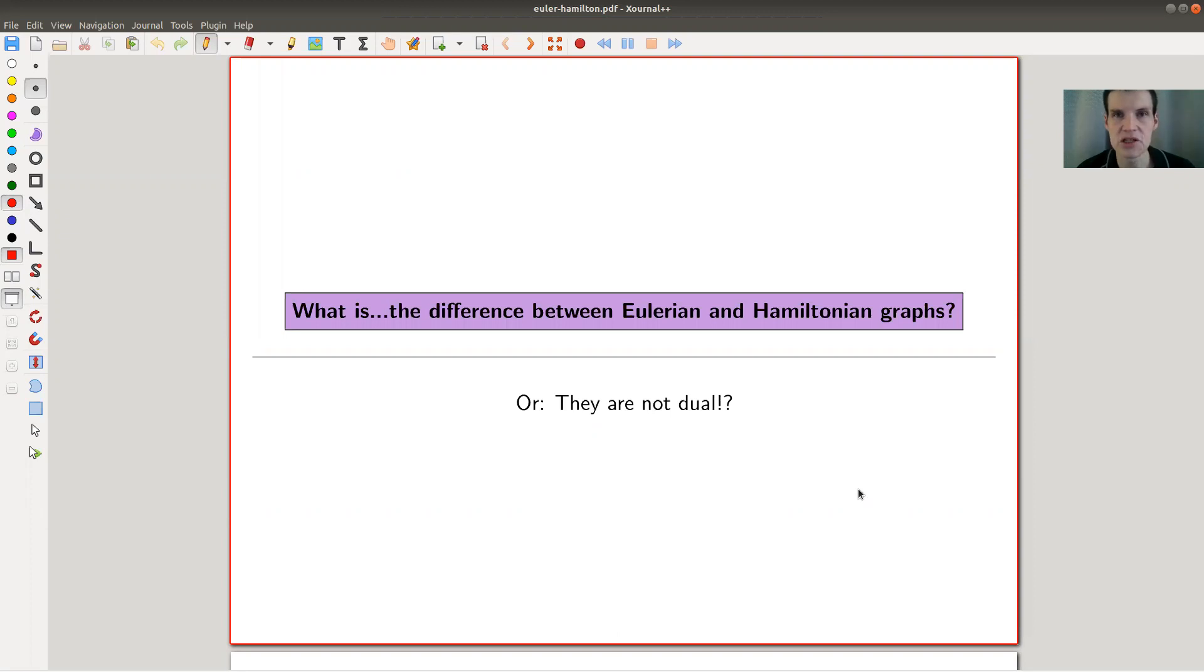Welcome everyone to my continuation of what are my favorite theorems, my very biased collection as usual. Today I would like to tell you about a collection of theorems which I find very surprising and they are related to Eulerian and Hamiltonian graphs which naively I always thought were dual concepts, but they are not. One of them is crazy and one of them is easy.